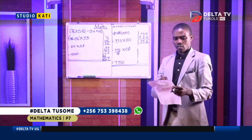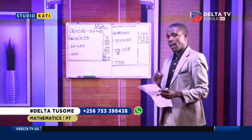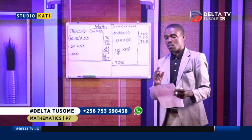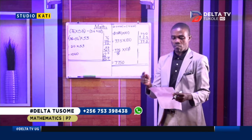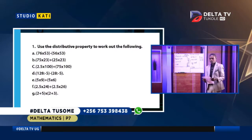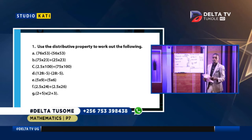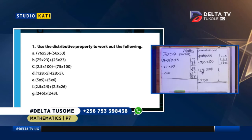The remaining questions you'll try them and then send me your working and I'll tell you whether you've been right or wrong. Please send your responses — how you've tried the numbers — on my WhatsApp number: 0753-398-438. I'll let you know whether you've been right or wrong. You are free to interact with me any time, any minute.